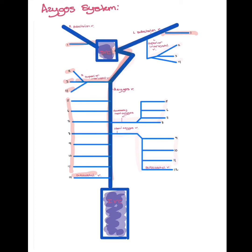On the left side, intercostal veins 2, 3, and 4 drain directly into the superior intercostal vein, into the subclavian vein, and to the SVC.